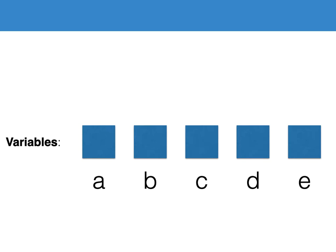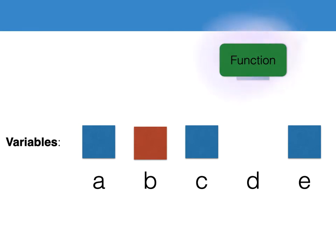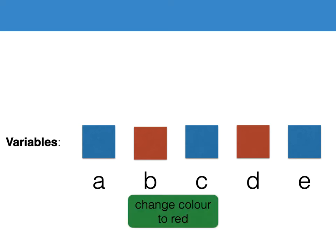To change the state of any variable we need a function as shown here. This function changes the state of variables from blue to red. We can indicate what this function does to the state of the variable using the diagram shown here. Variables in the blue state enter, the function does its thing, and variables are returned in the red state.